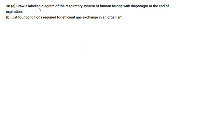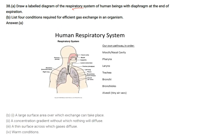Draw a labeled diagram of the respiratory system of a human being with the diaphragm at the end of expiration. The diagram shows mouth/nasal cavity, pharynx, larynx, trachea, bronchi, bronchus, left lung, right lung, bronchioles, and alveoli (air sacs) as the gas exchange structures.